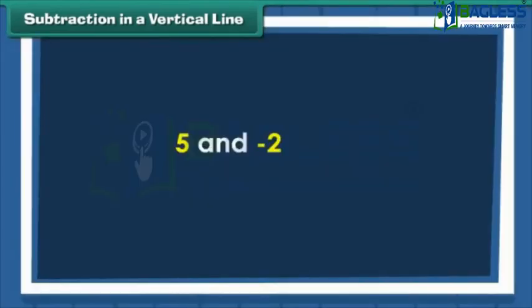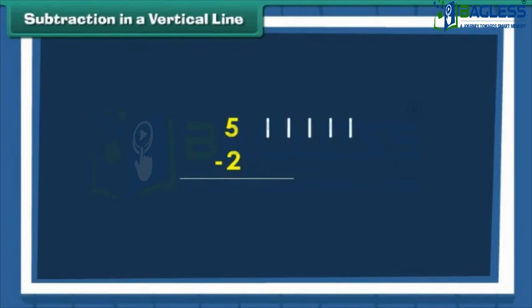Let us find five minus two. Draw five lines next to five. Cross out two lines to subtract two. Count the remaining vertical lines: one, two, three. Therefore, five minus two is three.